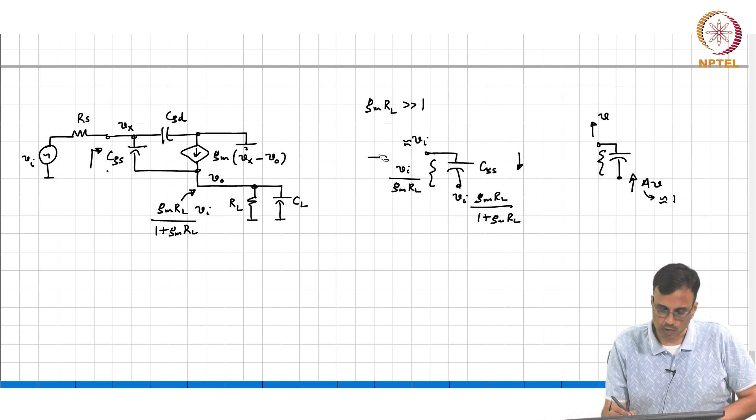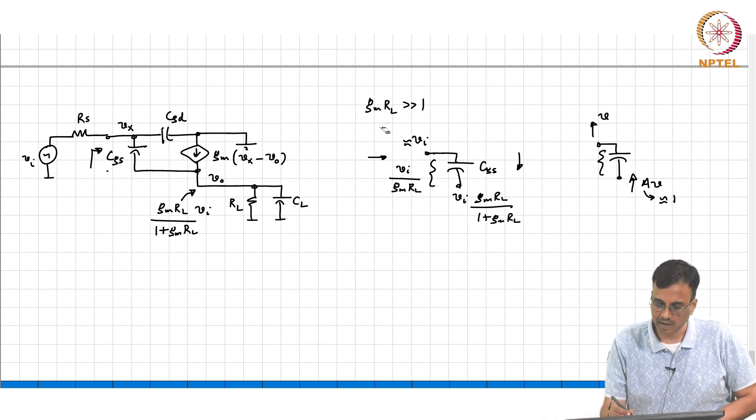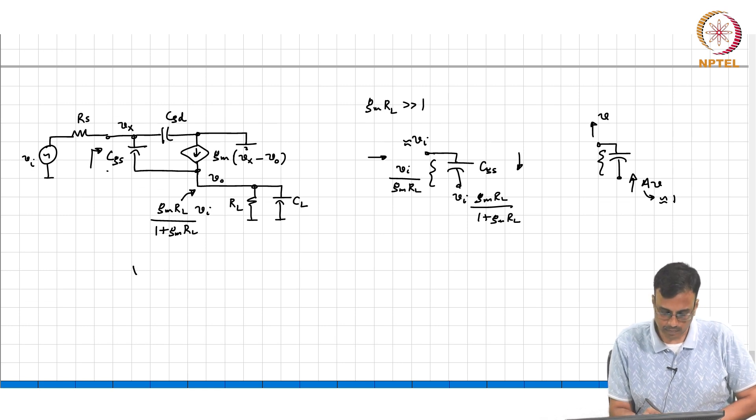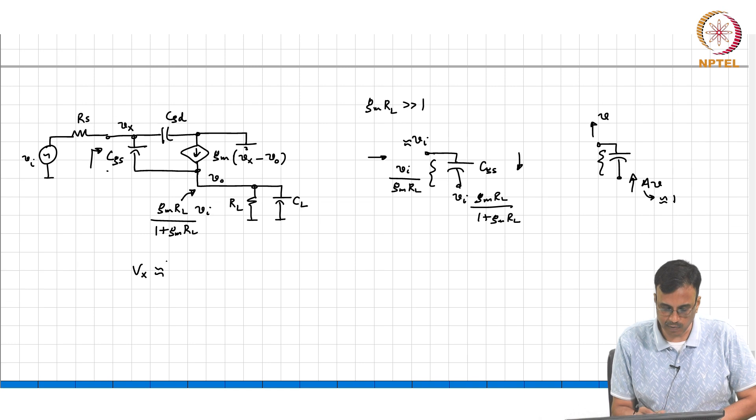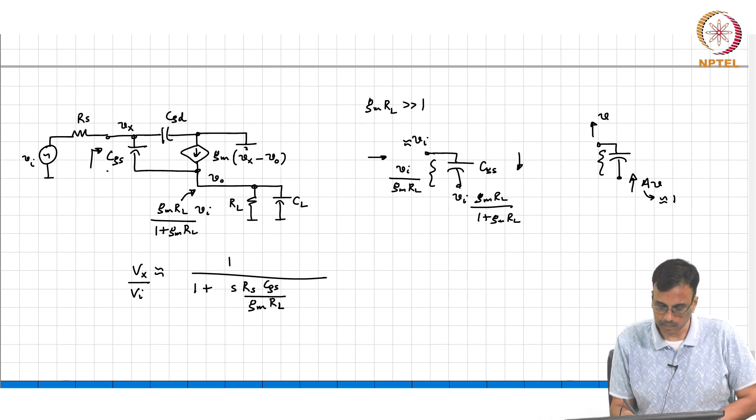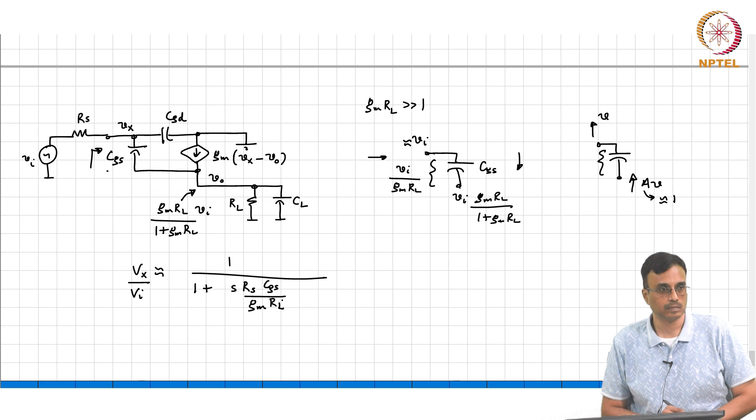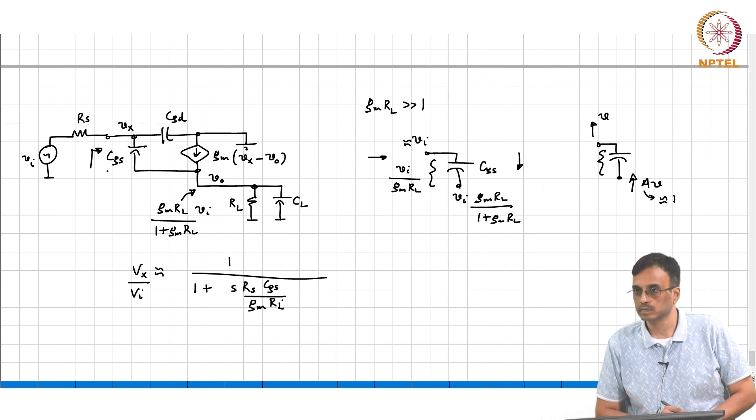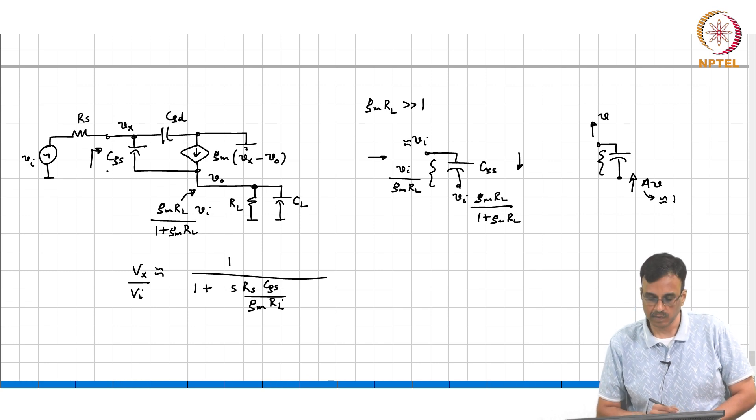And so therefore VX, using first order analysis, VX by VI is nothing but 1 by 1 plus S*RS times CGS over GM*RS. Does that make sense people?